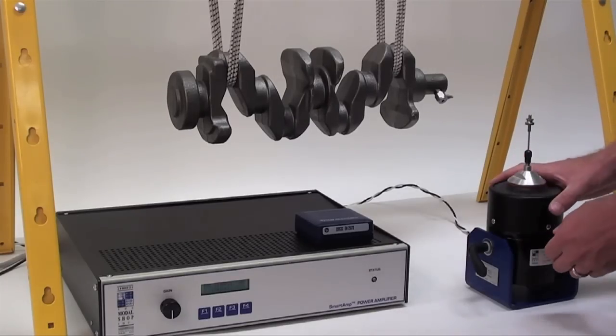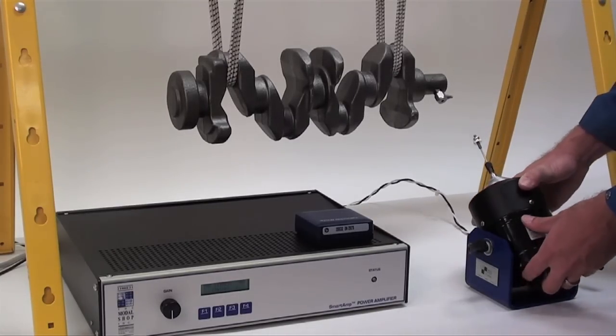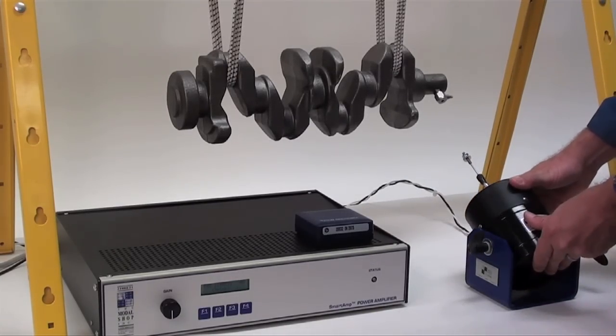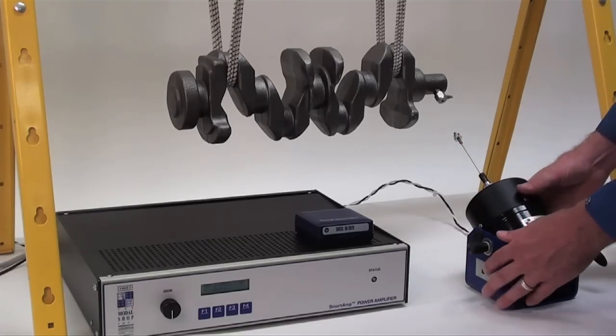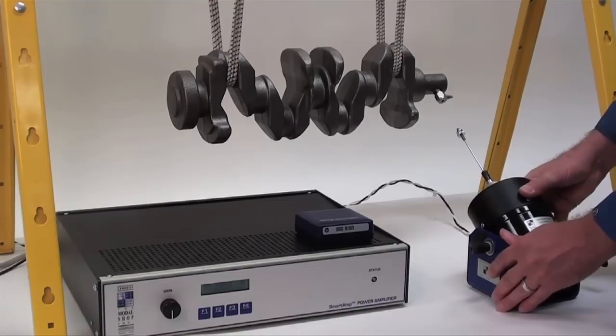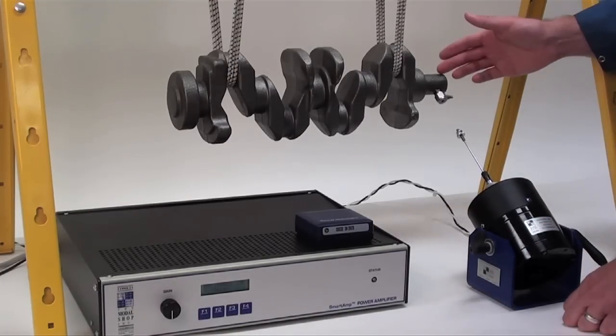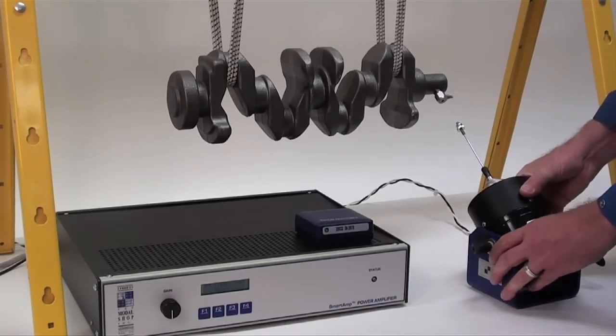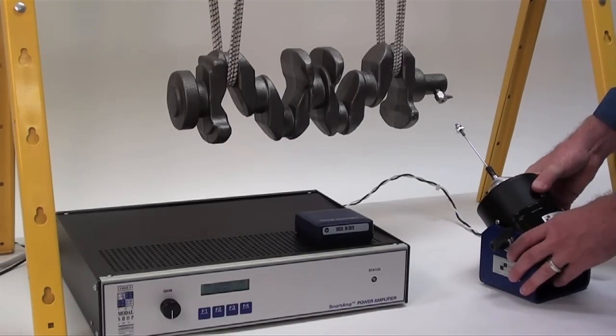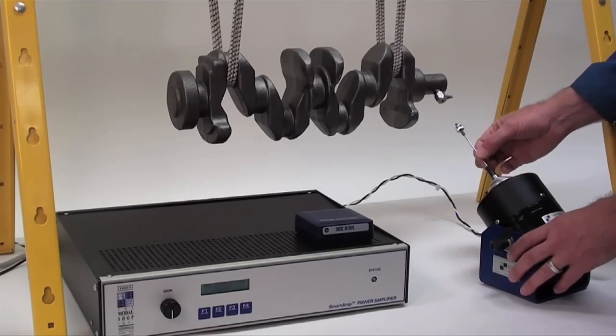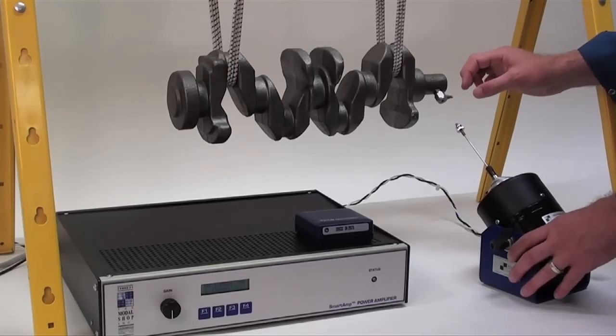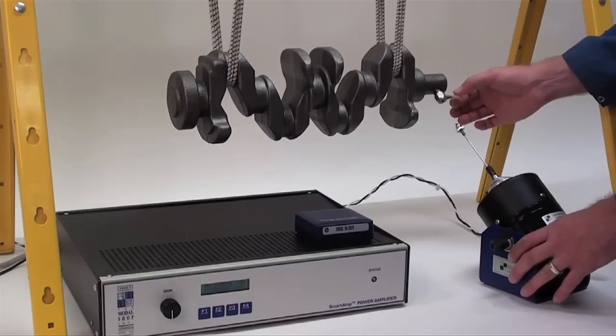And we have to be particularly careful about shaker alignment. We want the shaker and stinger to be perfectly aligned with the load cell for several reasons. One reason is we want to minimize the cross forces which are being applied to the object. If the shaker is not aligned with the load cell, we'll be putting in a force normal to, or along the line of the stinger, but we also may be imparting some side forces or moments to the structure which won't be measured by the load cell.